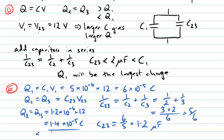Which, of course, as we predicted and as we've just shown now, is indeed less than Q1, which was 6 times 10 to the minus 5 coulombs.